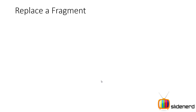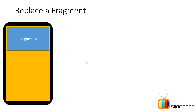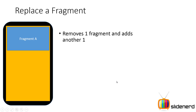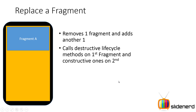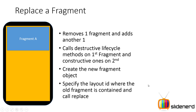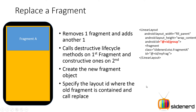Let's talk about replacing a fragment. The replace method is a convenience operation — most of the time you'll be removing one fragment and adding another, so that can be combined into a single operation called replace. When you replace fragment A, the destruction lifecycle methods are called on the removed fragment, and the constructive methods like onCreateView, onCreate, and onActivityCreated are called on the new one.